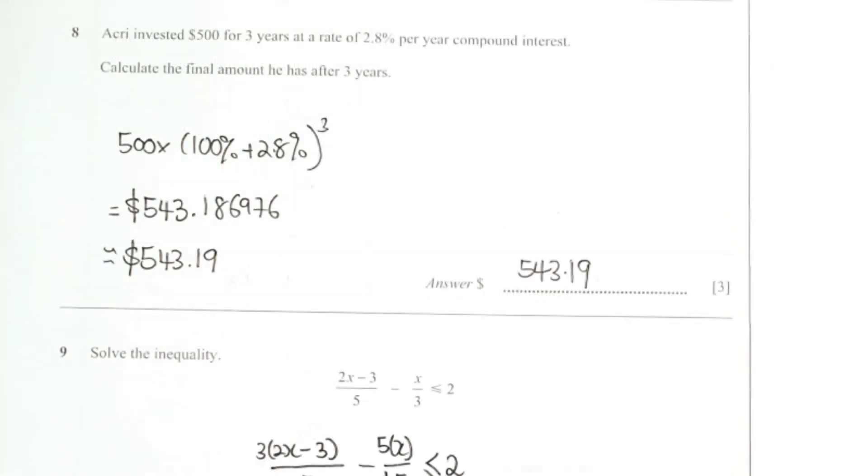Question 8 is pretty straightforward as well. The keyword here is compound interest. So I took 500 times 100 plus 2.8 percent to the power of 3, so your final results will be as attached.